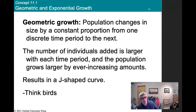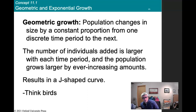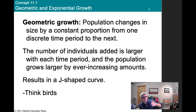Geometric growth is when a population changes in size by a constant proportion from one discrete time to the next. This might apply to plants that only reproduce every few years. The number of individuals added is larger with time, and the population grows by ever-increasing amounts. If a population grows by 10% every year, it's not a linear increase — it's a J-shaped curve because that 10% becomes a larger absolute number every year.